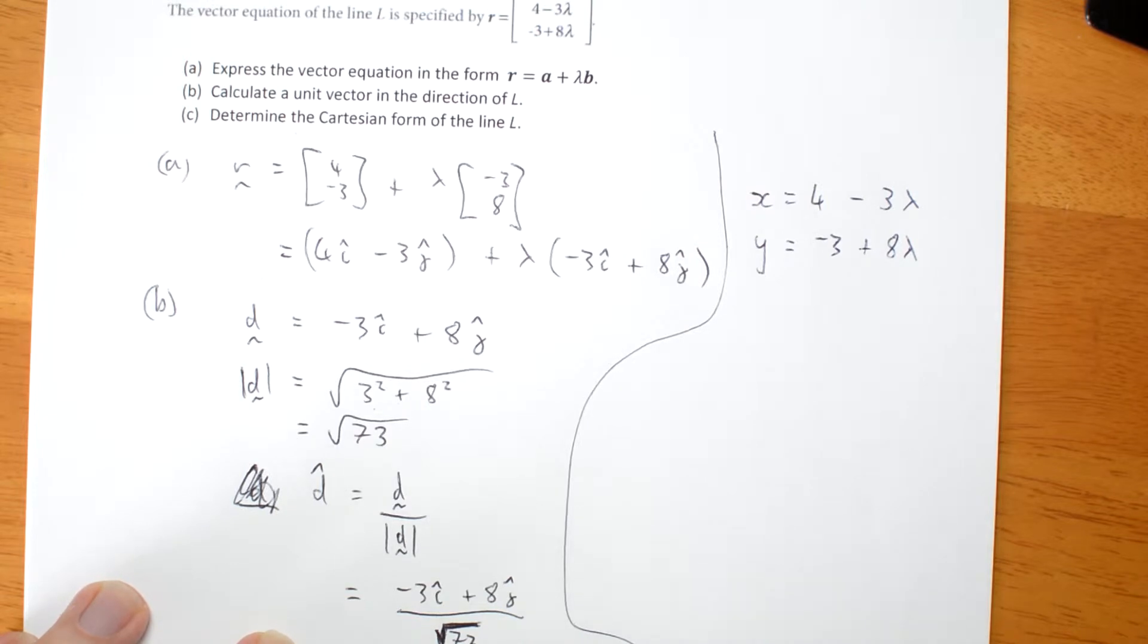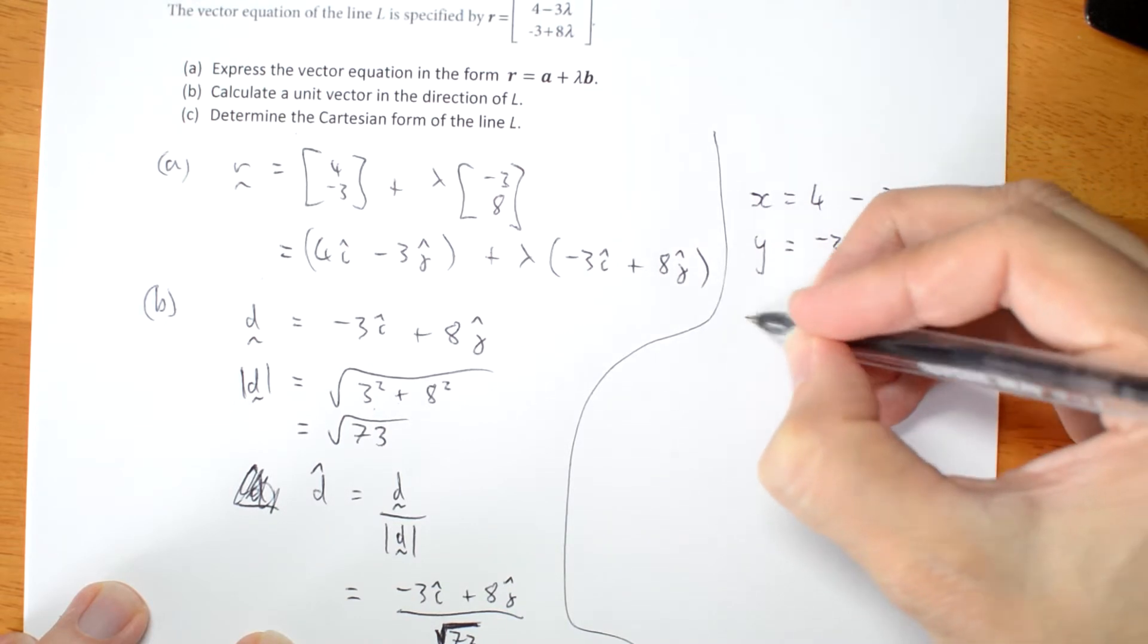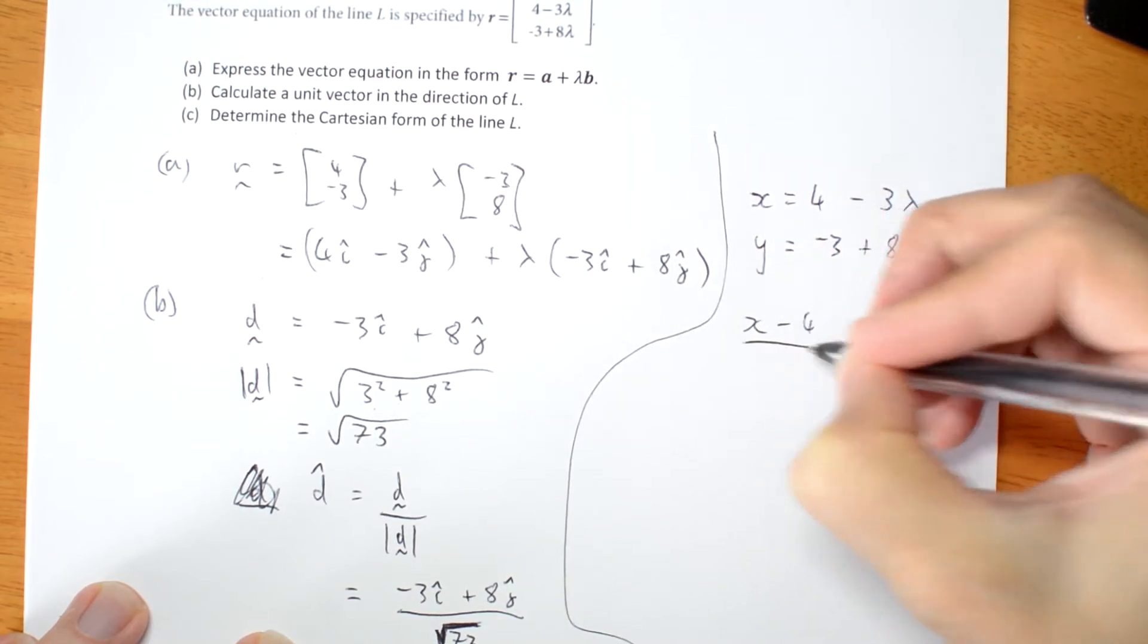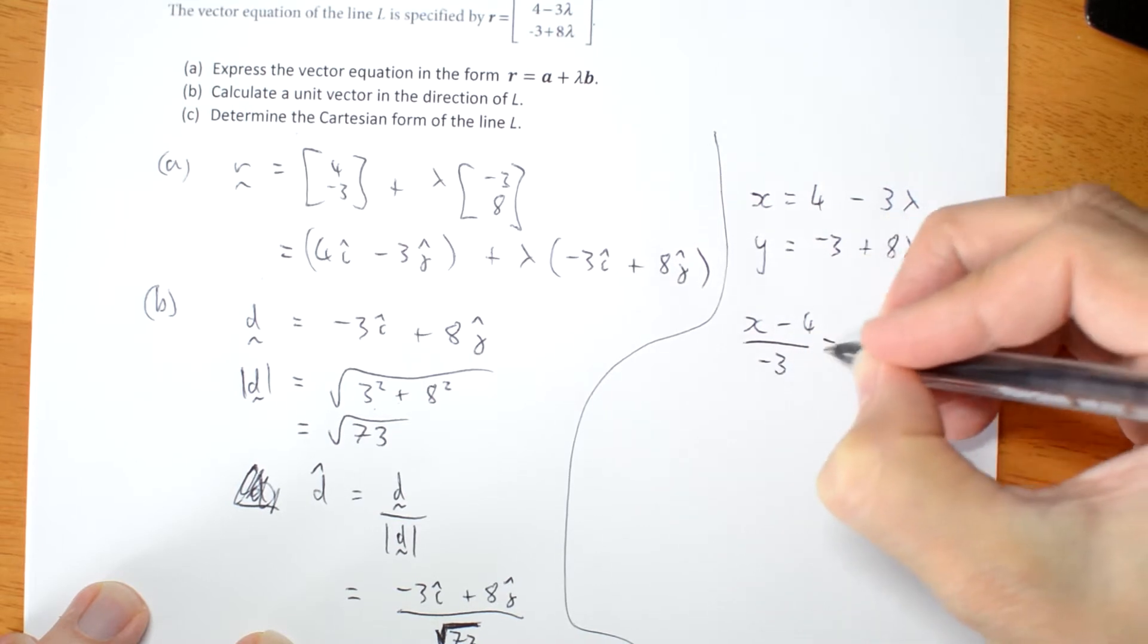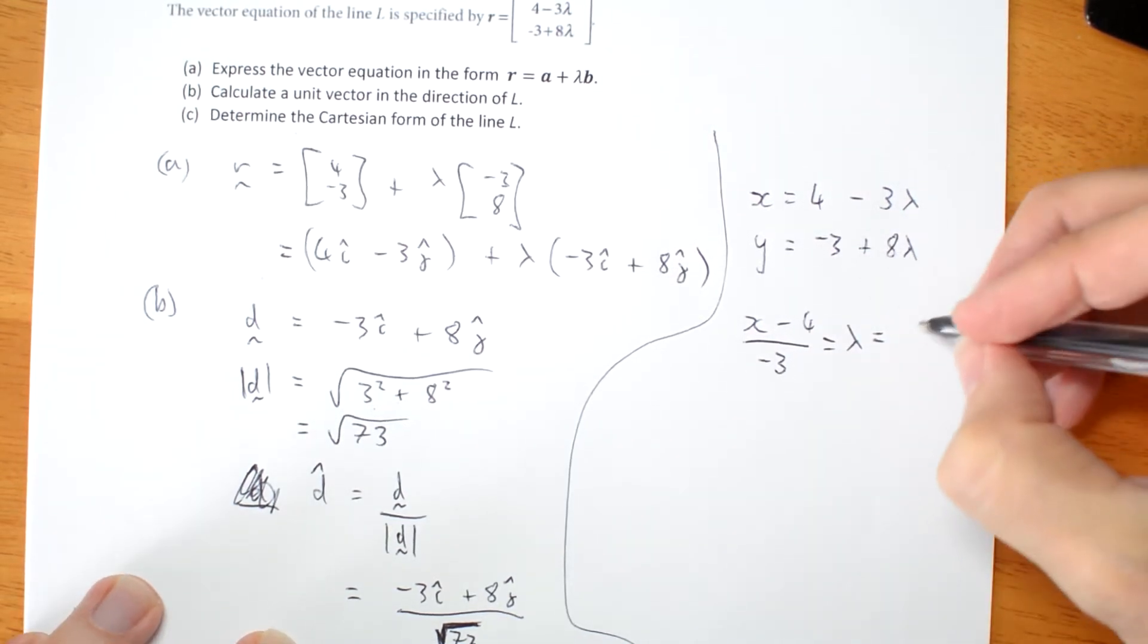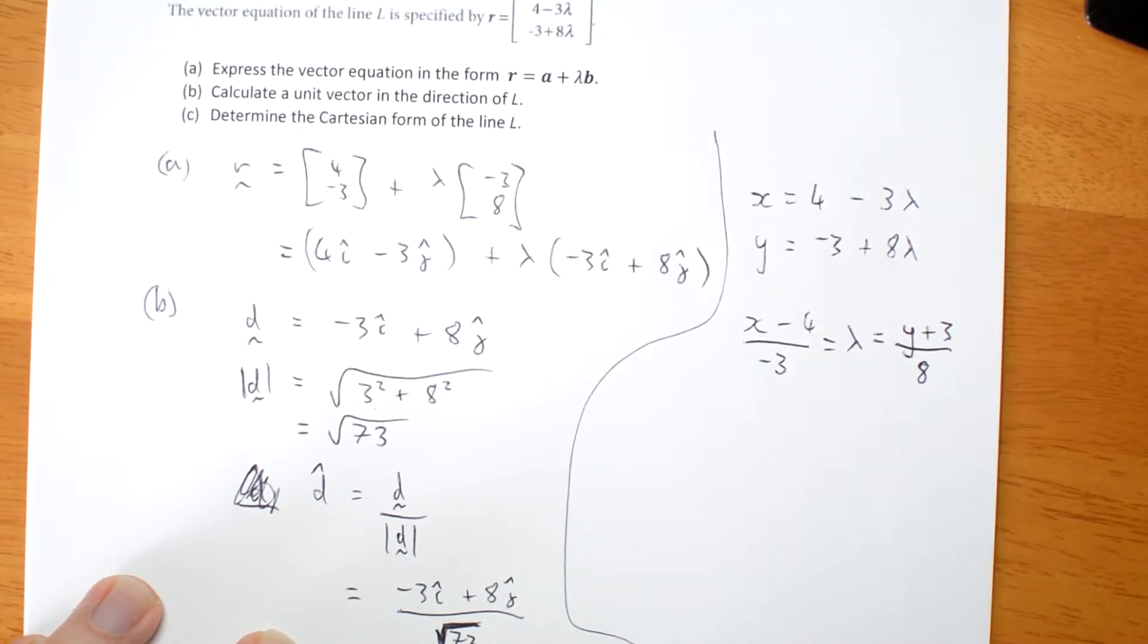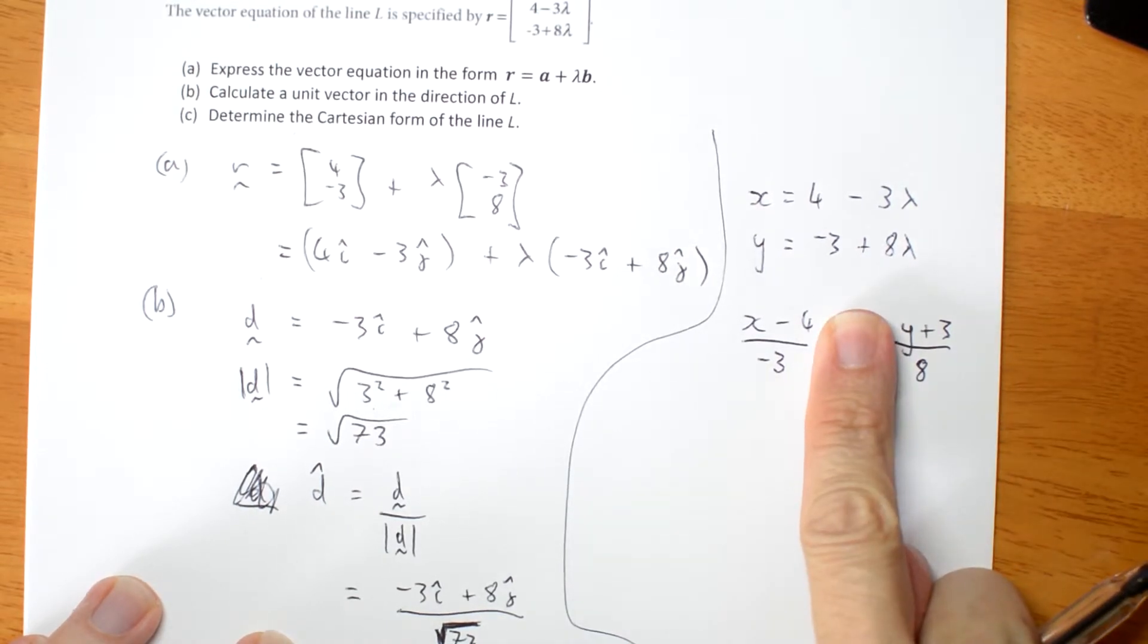Rearrange each of those for lambda. So the first one gives me x minus 4 over negative 3, and the second one gives me y plus 3 over 8. So if I take the lambda out of the middle and just make those two equal, I have the Cartesian form.